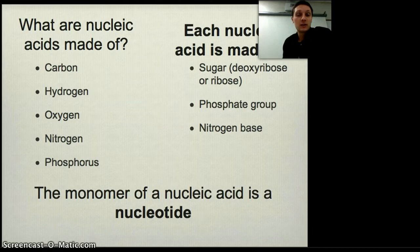Each nucleic acid is made of a sugar - deoxyribose in DNA or ribose in RNA - as well as a phosphate group and nitrogen base.